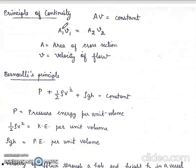Next is Principle of Continuity. According to Principle of Continuity, Area into Velocity is Constant. Product of Area and Velocity is Constant. A1 v1 is equal to A2 v2.